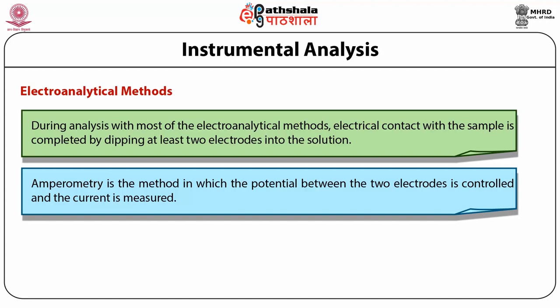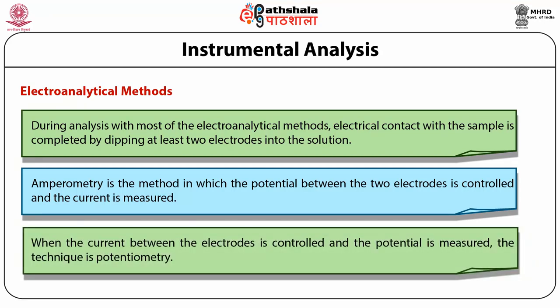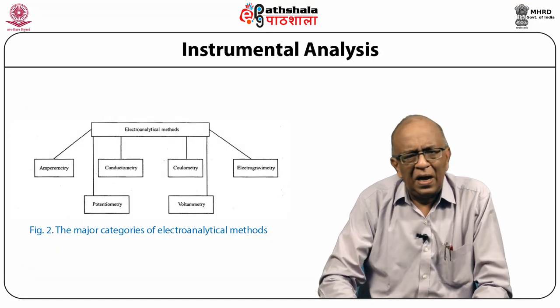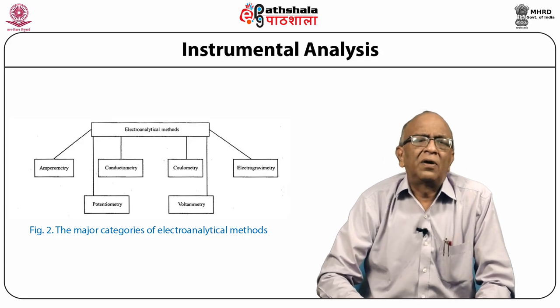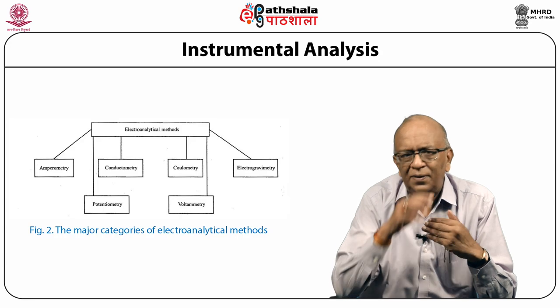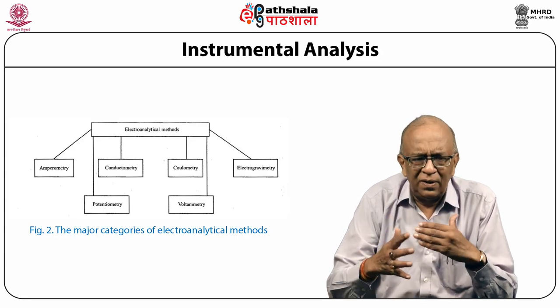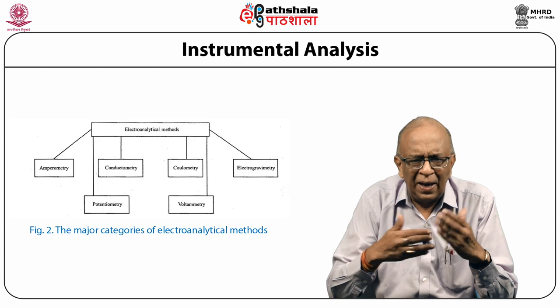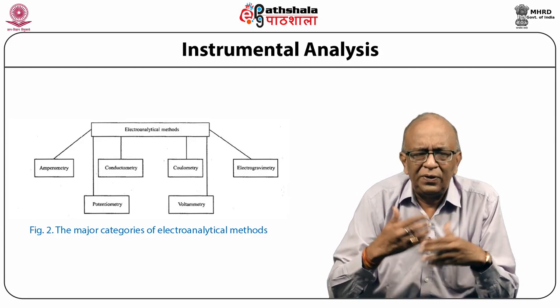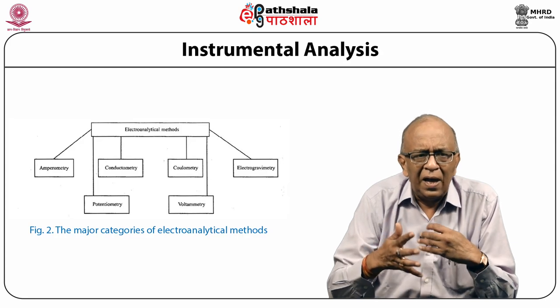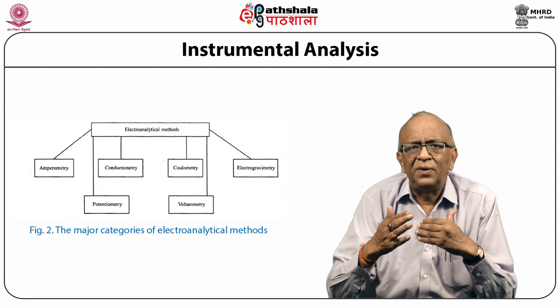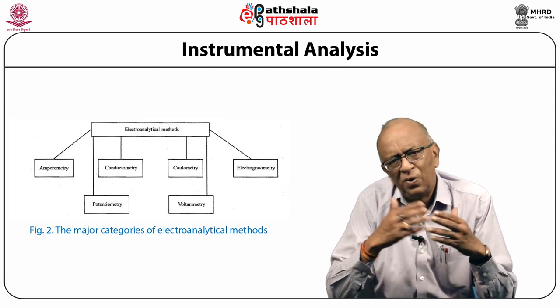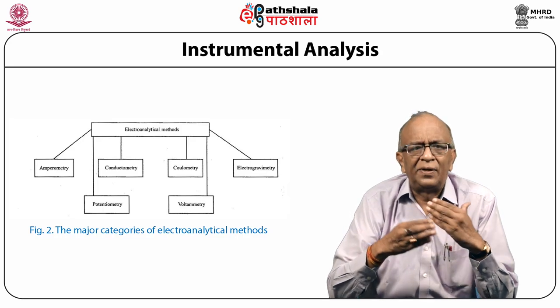Amperometry is the method in which the potential between the two electrodes is controlled and the current is measured. When the current between the electrodes is controlled and the potential is measured, the technique is called potentiometry. Electroanalytical methods are based upon the movement of electrons; we apply energy in the form of potential and measure current. There are three parameters which vary: potential, current, and coulombs. On the basis of these parameters, these techniques have been divided into a group of over 60 analytical techniques.